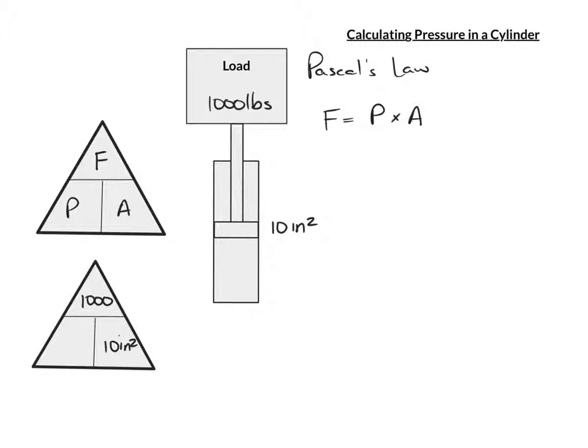Now we can either put this in our calculator and say 1,000 divided by 10, or we can simply see that those two zeros would cancel out and we would be left with 100 psi.